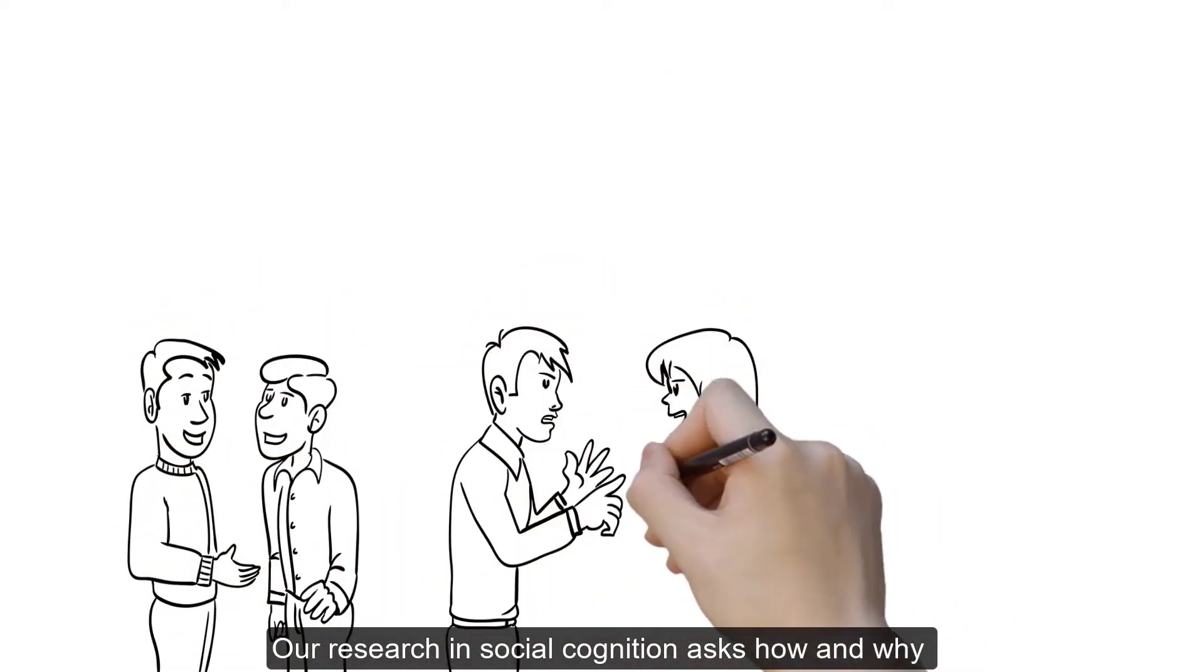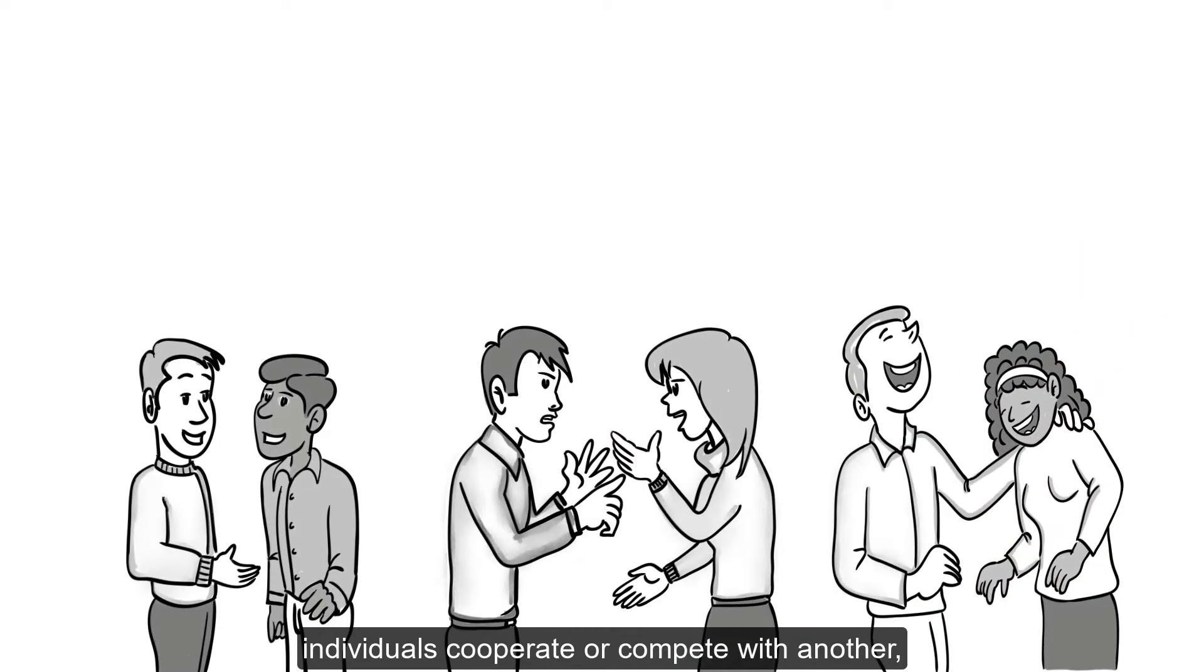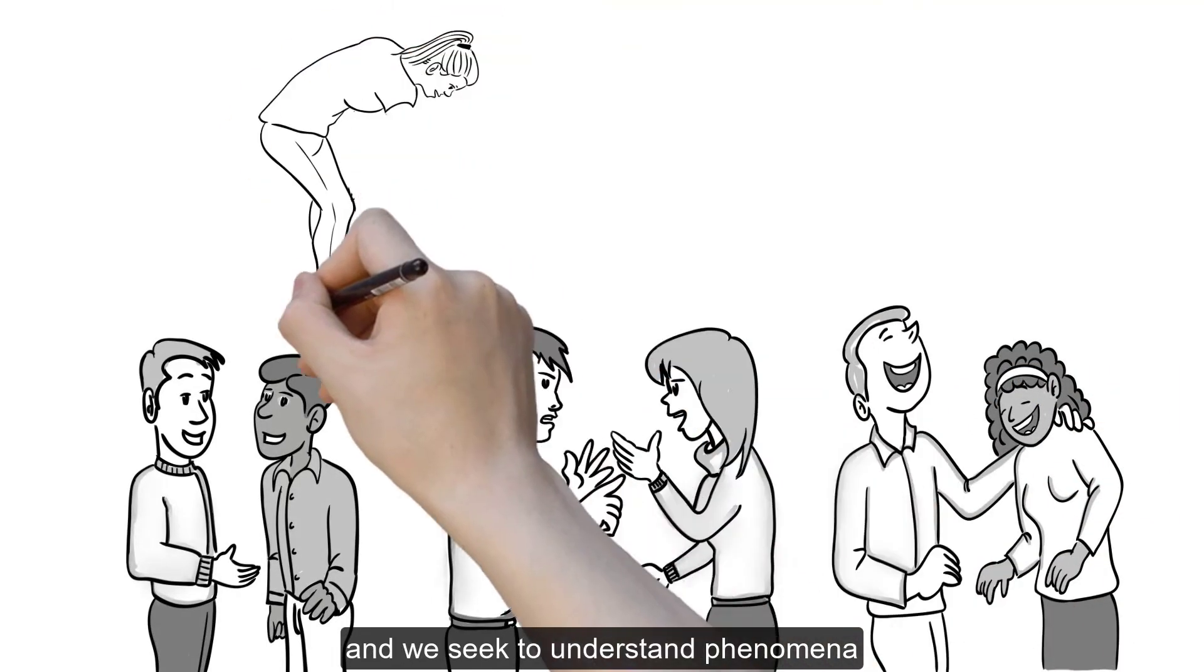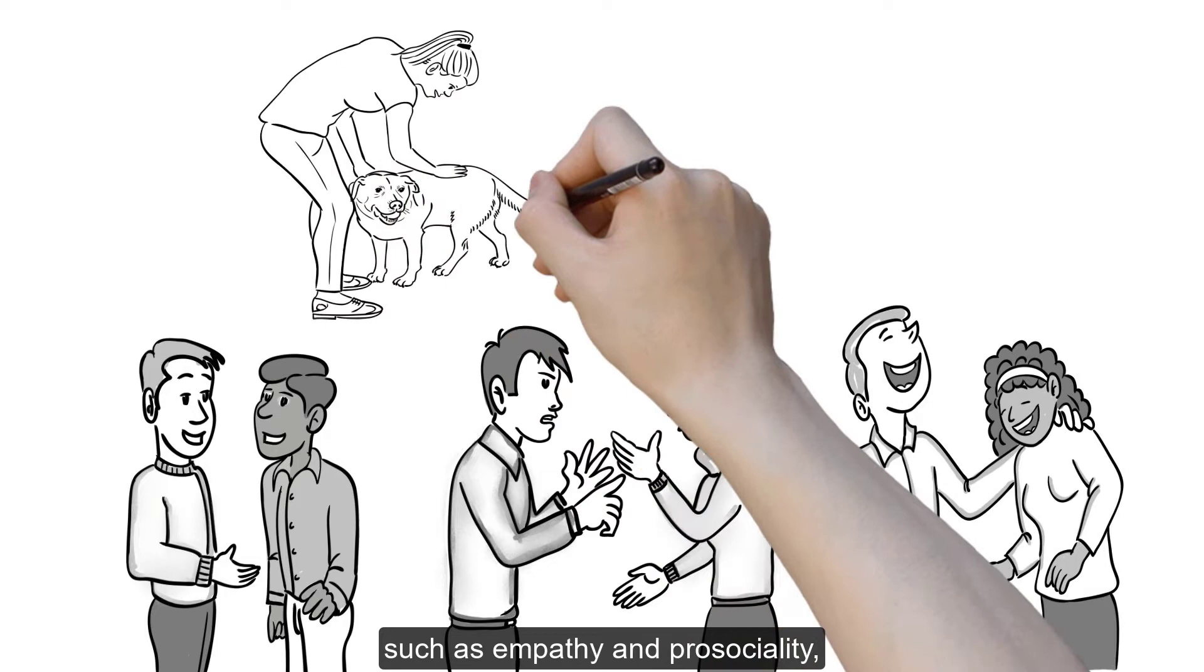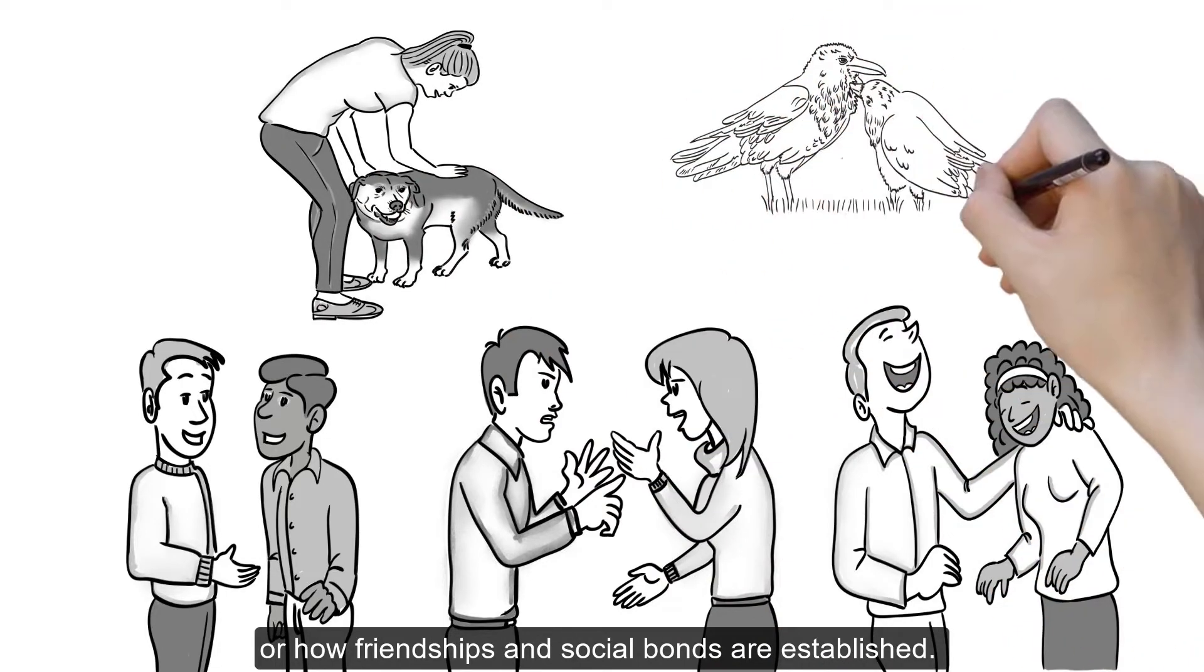Our research in social cognition asks how and why individuals cooperate or compete with one another, and we seek to understand phenomena such as empathy and prosociality, or how friendships and social bonds are established.